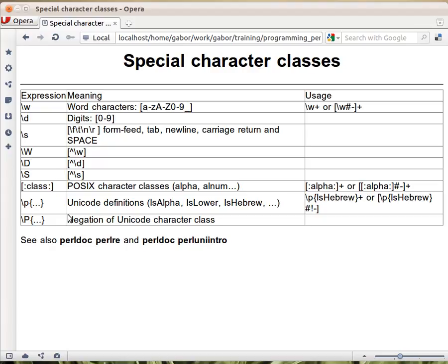So Unicode is this large table with tens of thousands of characters which are grouped into smaller groups into character classes and they each have a name like is-alpha or is-lower or is-hebrew. And these character classes are just a list of characters. And Perl gives you access to these character classes so you don't have to spell out each list.